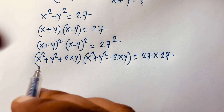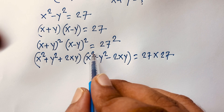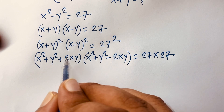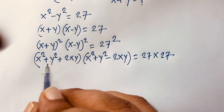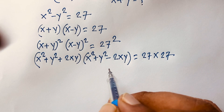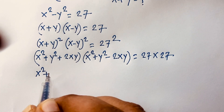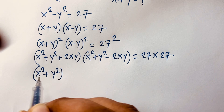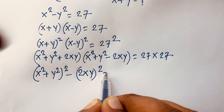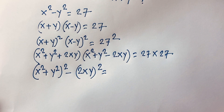Then this equation becomes: here is x squared plus y squared, and here is x squared plus y squared. If you think of this as 'a' and this as 'b', I can say easily a plus b times a minus b. According to this rule, it will be x squared plus y squared whole square minus 2xy whole square is equal to 27 times 27.